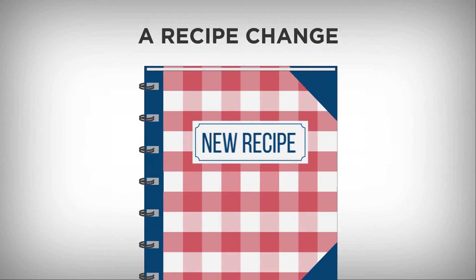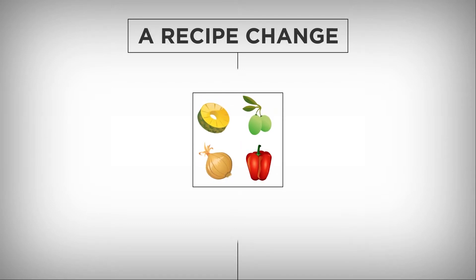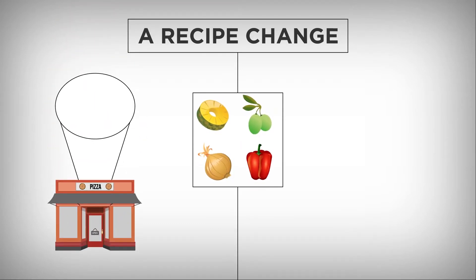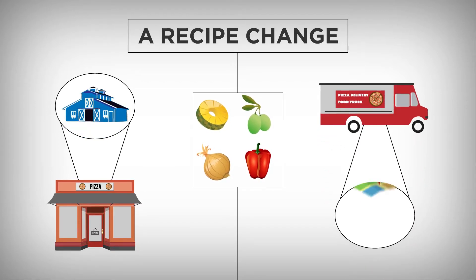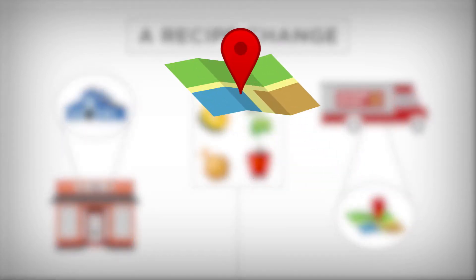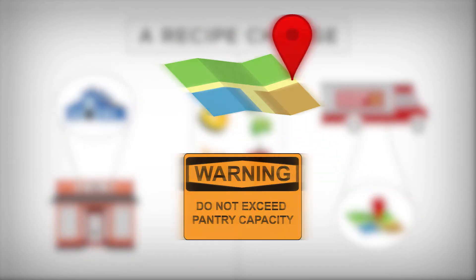A recipe change. New ingredients may need to be introduced for a trendy pizza. For a standard restaurant, this basically represents an order from perhaps a new supplier. For a food truck, this may represent a new stop in the truck's supply route, which could take the truck off course as well as exceed the truck's pantry capacity.